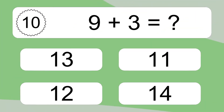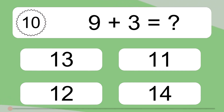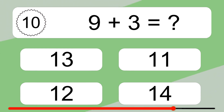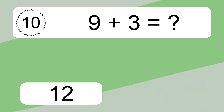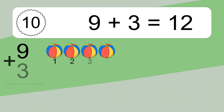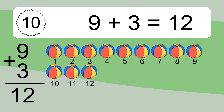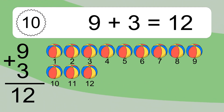9 plus 3 equals what? 9 plus 3 equals 12. Let's count it: 1, 2, 3, 4, 5, 6, 7, 8, 9, 10, 11, 12.